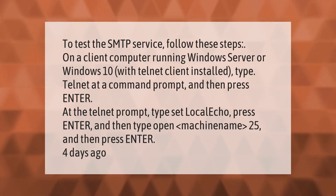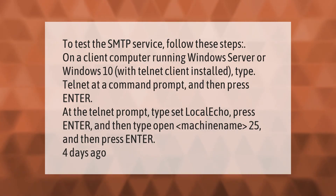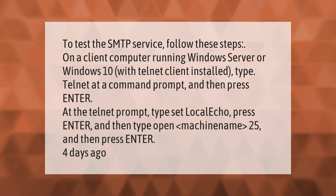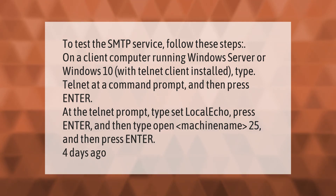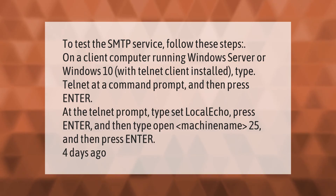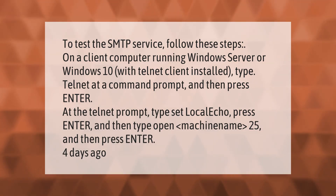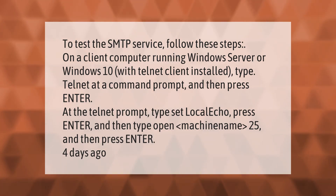To test the SMTP service, follow these steps: on a client computer running Windows Server or Windows 10 with Telnet client installed, type 'telnet' at a command prompt and press Enter. At the Telnet prompt, type 'set local echo' and press Enter, then type 'open <machine name> 25' and press Enter.